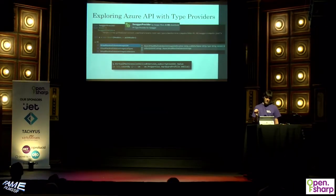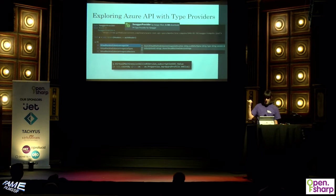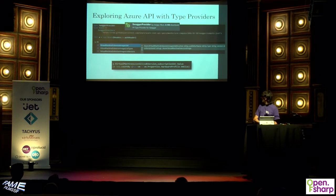Something really nice that we use is a type provider for Swagger. We use that to discover Azure APIs. Azure is a complex beast — the API is very complex and changes all the time, and reading the documentation just doesn't work. You want to be able to play with the API, create VMs, and explore what you have deployed. With just three lines of code, we can point the provider to the URL of the Swagger interface for the Compute API of Azure, and with two more lines enumerate all VMs on the subscription and do a count-by VM size, for instance.